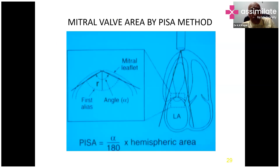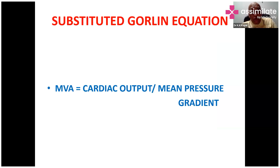This was the PISA method. I will not go into the details of the PISA method because it requires a lot of experience and expertise, and most people don't have that. Looking at PISA for mitral stenosis has its drawbacks. There is also a continuity equation approximation using cardiac output divided by the mean mitral gradient, but the most accurate method is planimetric.